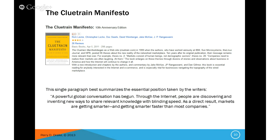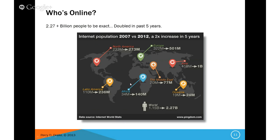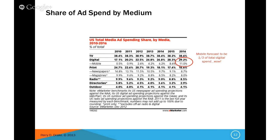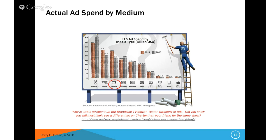So just wanted to make sure you guys were aware of that manifesto. A few stats: 2.27-plus billion people are basically on the web, as of 2012. Looking at ad spend by medium, by 2016 mobile is forecasted to be a pretty big chunk of digital spend. Make sure you guys embrace any opportunities to take mobile marketing courses and stay in touch with what's going on in mobile — it's very, very important.